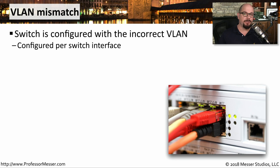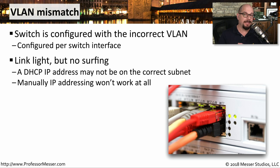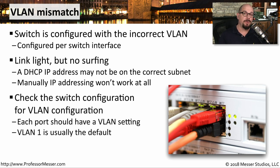When you're configuring the interfaces on your switch, you're assigning each interface with a VLAN. If you happen to put the wrong VLAN in for an interface, you may run into some problems. For example, a device may have a link light showing it sees the switch on the other end, but it's not able to surf the internet or connect to any other devices. Or you may see an IP address assigned via DHCP, but it's not for the subnet you thought you should be on. The best way to check for a VLAN configuration is on the switch itself — you would SSH or connect to the switch and see what the VLAN setting is for the interface connected to that device. VLAN 1 is usually the default for a switch, but many organizations will have many different VLANs, so you may need to check your documentation to see exactly what VLAN that device should be a member of.